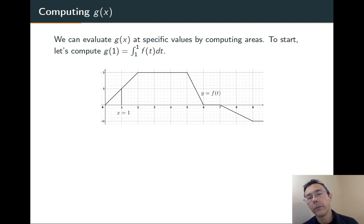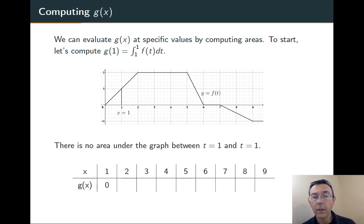Let's work through an example. Let's stick with that same graph, y equals f(t), and let's compute g(x) at different values, starting with g(1). So when I look at the area under this graph between t equals 1 and t equals 1, I get no area. So g(1) is 0.